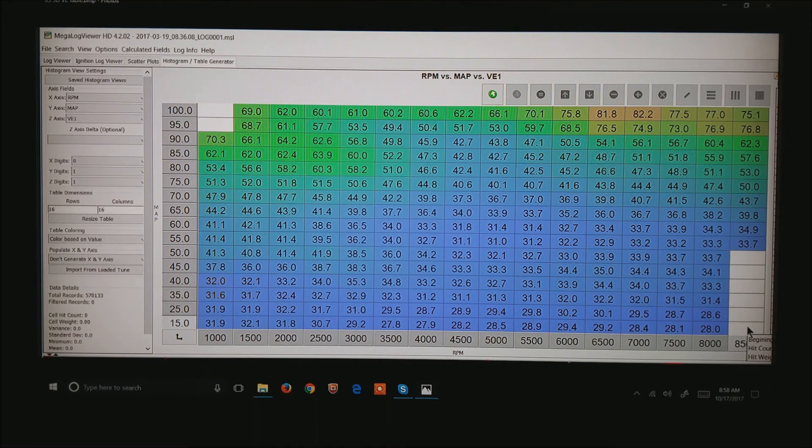This happens to be an ITB motor, and they are notorious for showing this trait. This motor would be very difficult to tune with a speed density system with huge variations in volumetric efficiency in a very few number of cells.